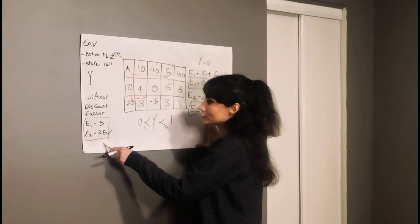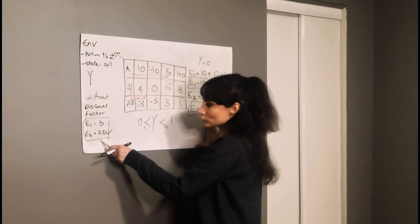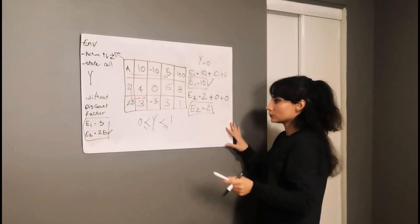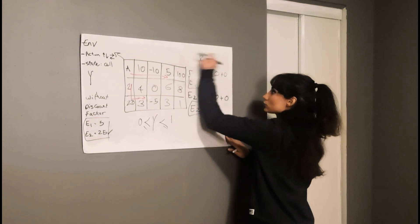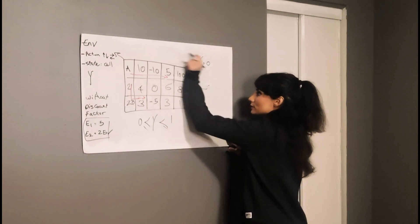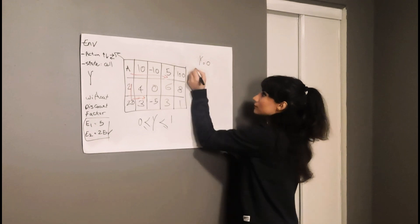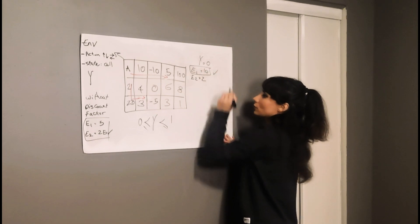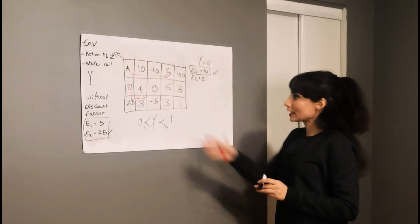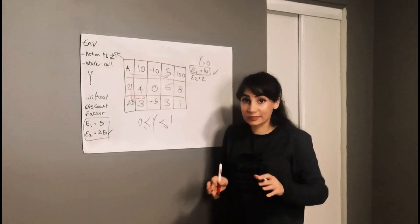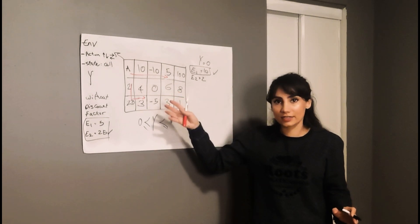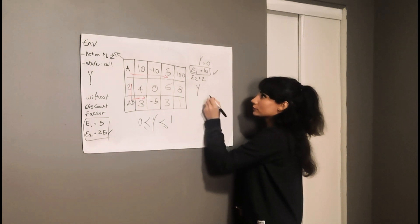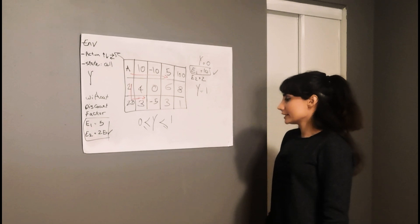So to summarize: without discount factor, episode 2 won. With discount factor gamma equal to 0, episode 1 won — episode 1 gave 10 and episode 2 gave 2. At this point, my agent is completely short-sighted: it only cares about the immediate cell in front of it. Now let's look at the other extreme, which is gamma equal to 1.